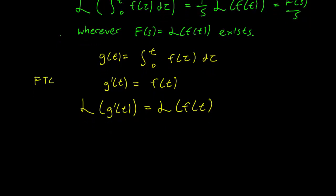Anyway, we have this written down and we can use our derivative formula. The derivative formula tells us that the Laplace transform of g prime of t is equal to s times the Laplace transform of g(t) minus g(0).